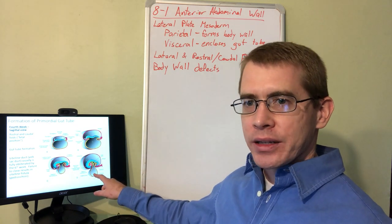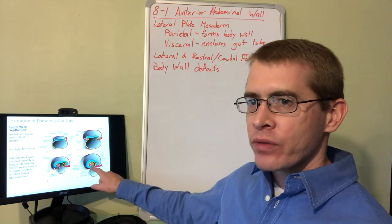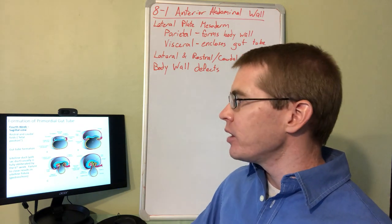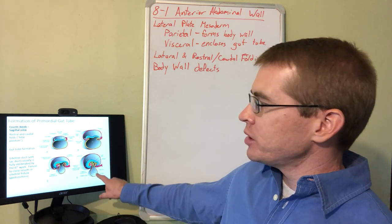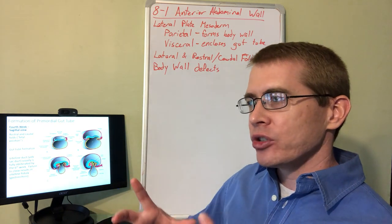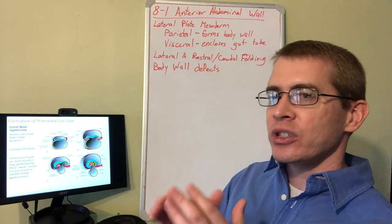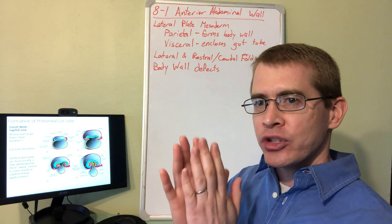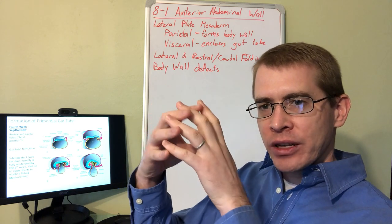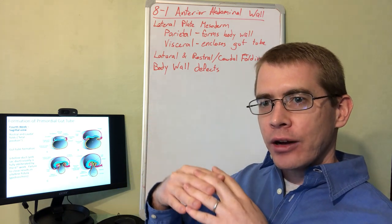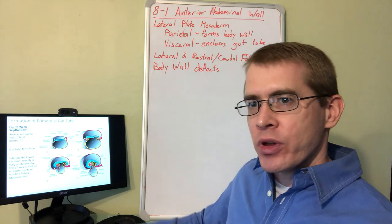Portions of the gut tube actually form outside the body wall of the embryo during development. Usually by about the sixth week, this portion becomes obliterated and the yolk sac becomes fully internalized. The gut tube becomes internalized. So there's this physiological process where the gut tube protrudes out of the embryo during development and then retracts back in. This causes its curved, convoluted shape within our abdomens.